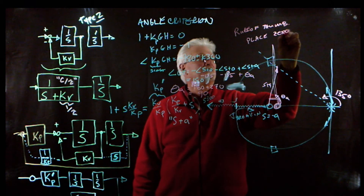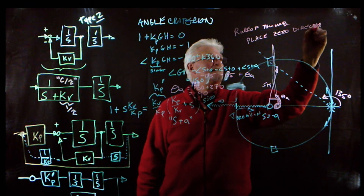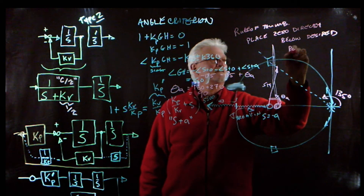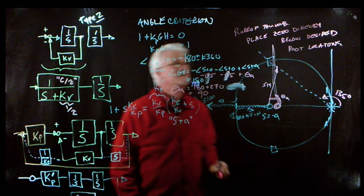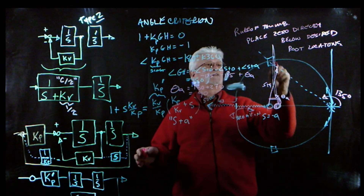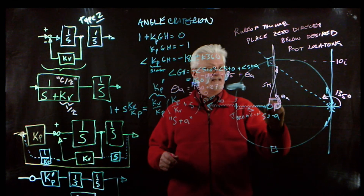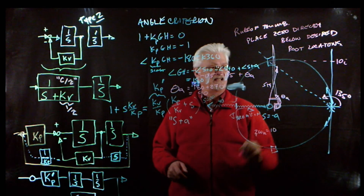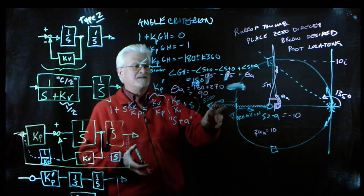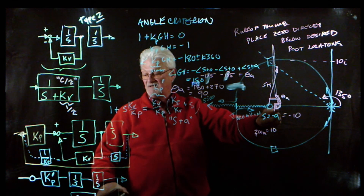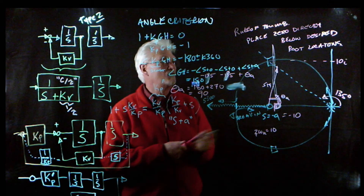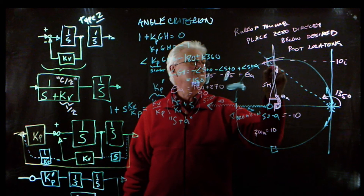That means we have to place the zero directly below the desired root locations — that's the rule of thumb. So if perhaps we want the roots at 10j with zeta omega_n equals 10, we would put s equals minus a equals minus 10. Because of the angle criterion we've designed our controller — the s plus a we're adding — so that the root locus absolutely forces through our desired root locations.